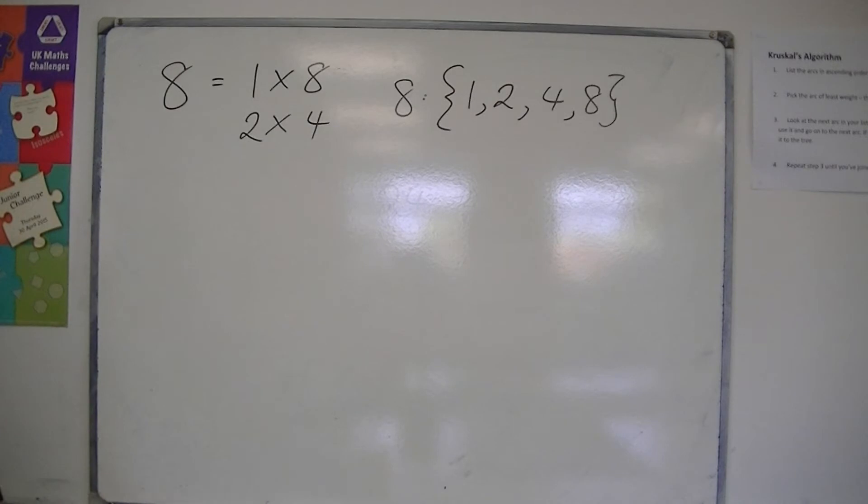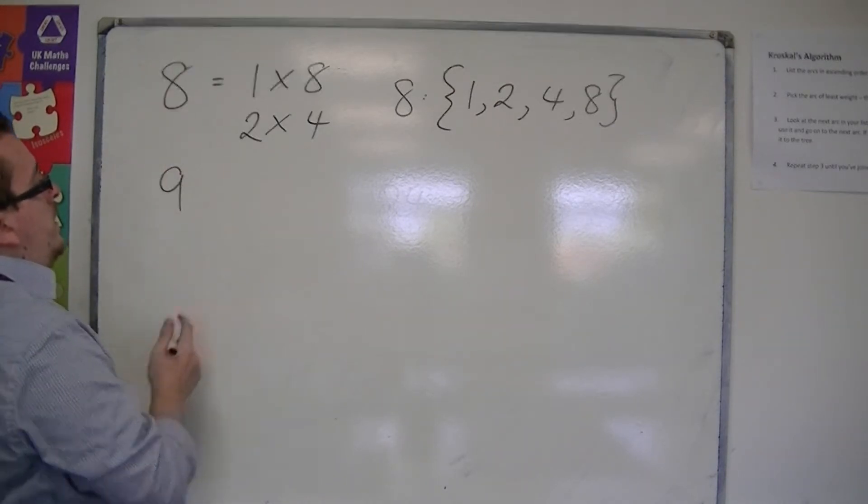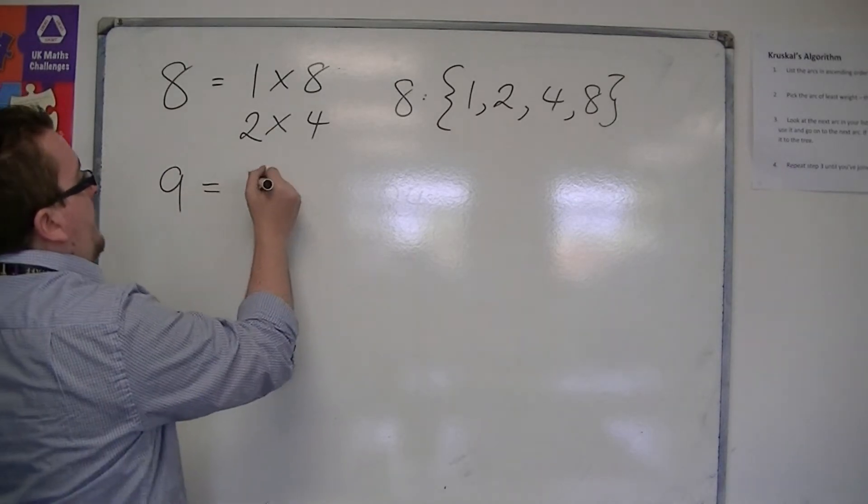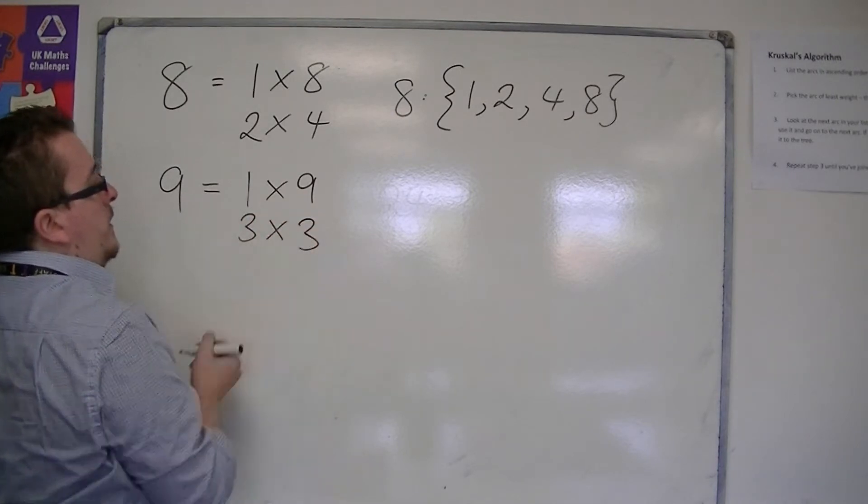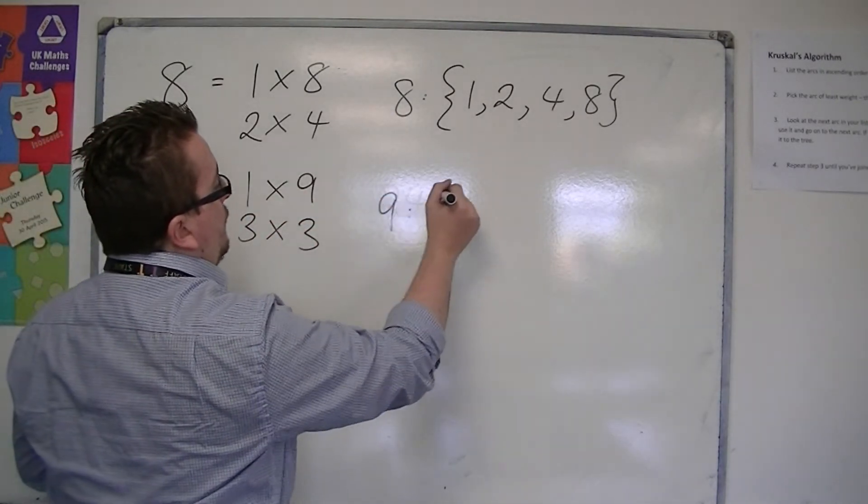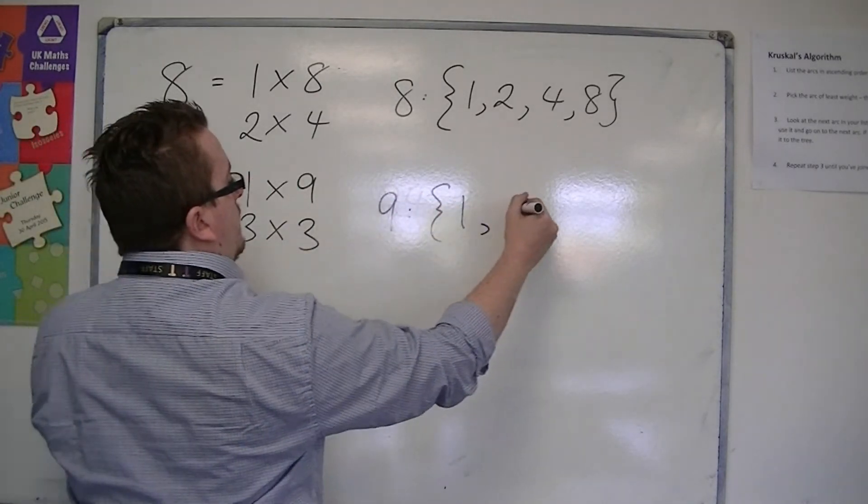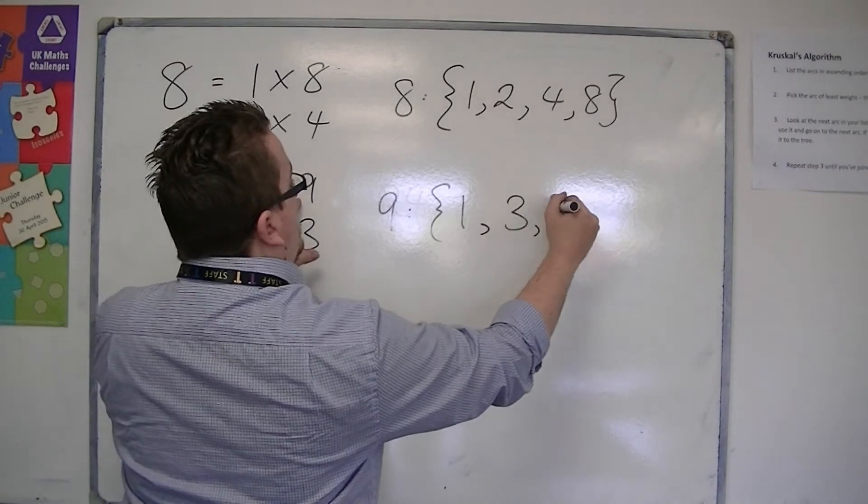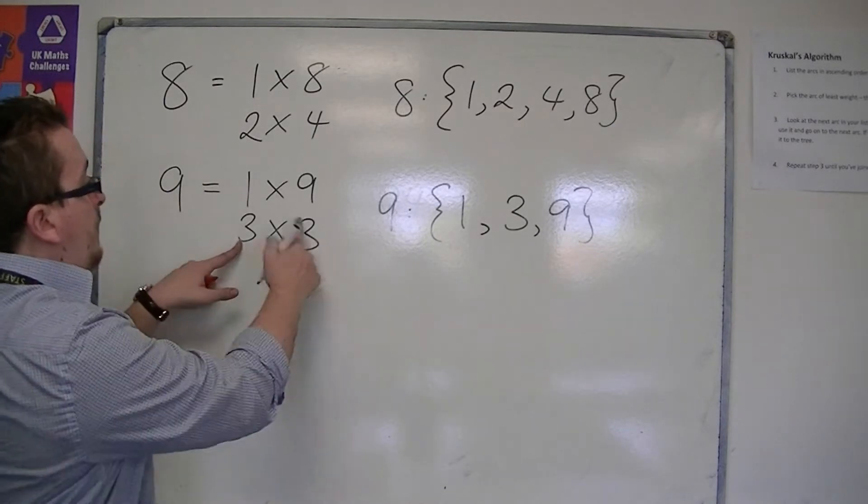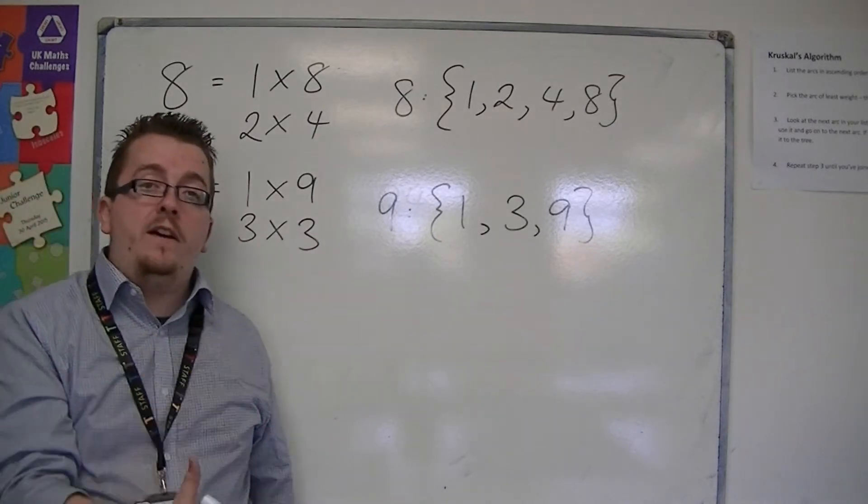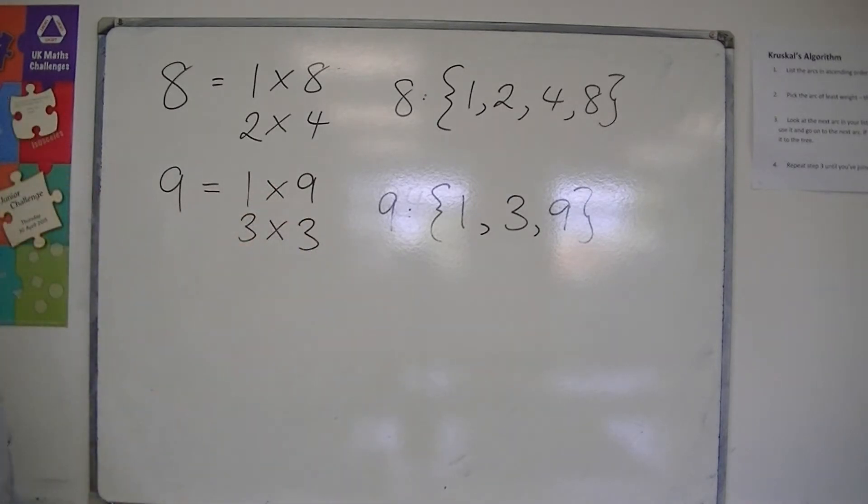If I was looking at the number 9, then the ways that I can make 9 are 1 times 9, or 3 times 3. So, for 9, the factors are 1, 3, and 9. Notice how I'm not including 3 twice. So, 3 was a repeated factor there, because 9 is a square number.